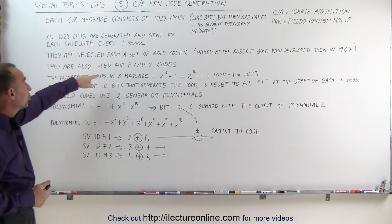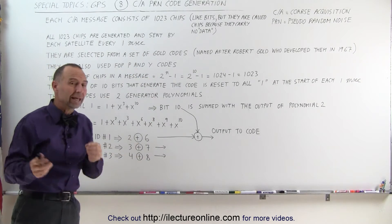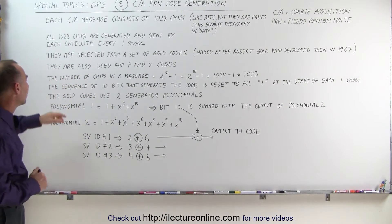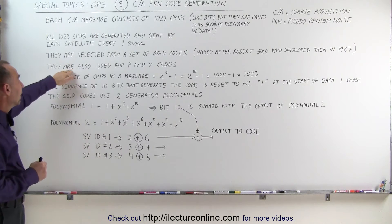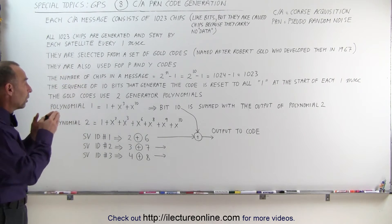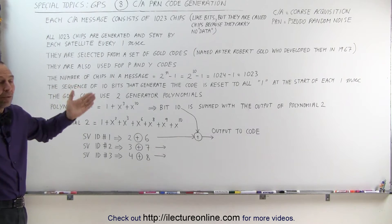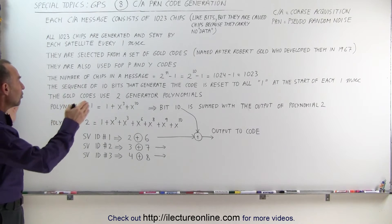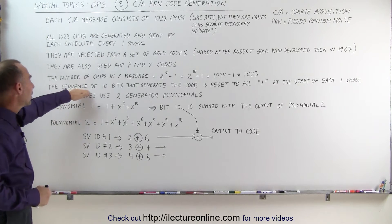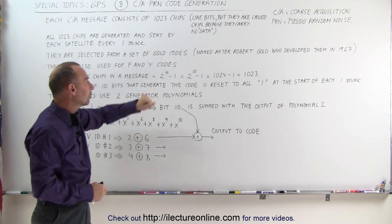They're also used for producing the P and the Y codes. Now, we're talking about the CA codes. The way the number of chips in a message are determined depends on the number of bits you want to use to develop the code. In this case, we're using 10 bits to do so. So the sequence of 10 bits generate that code.